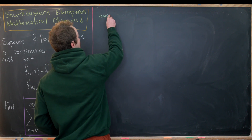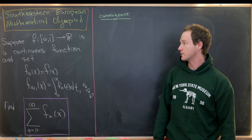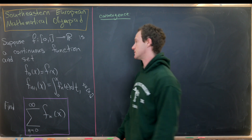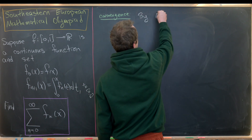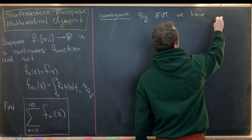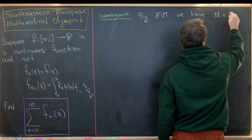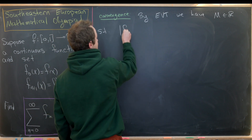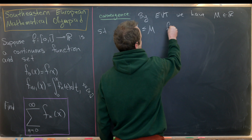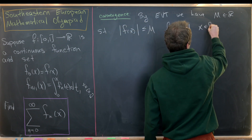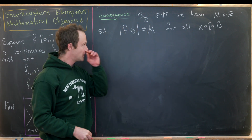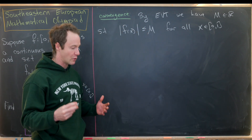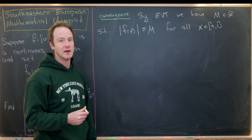We're going to start with convergence. A big hint is that we have a continuous function f on a closed interval, so by the extreme value theorem, there is some number M such that |f(x)| ≤ M for all x in [0,1]. Now hopefully we can use this to bound all of the functions f_n — maybe not by a constant, but by another function.